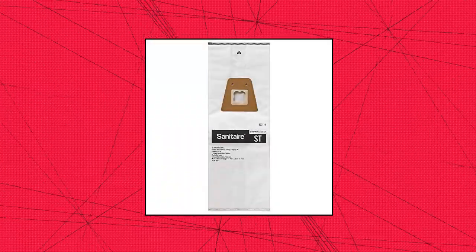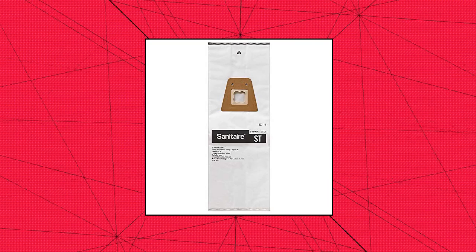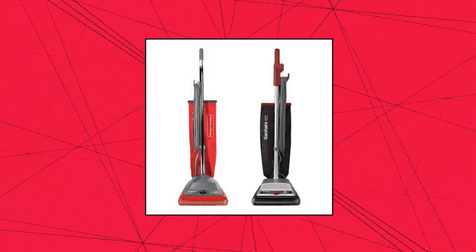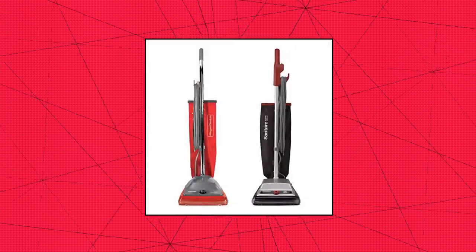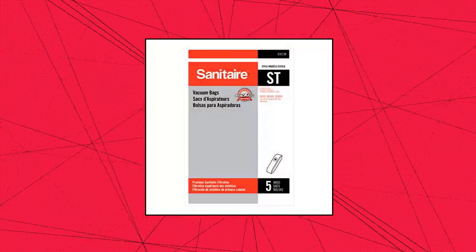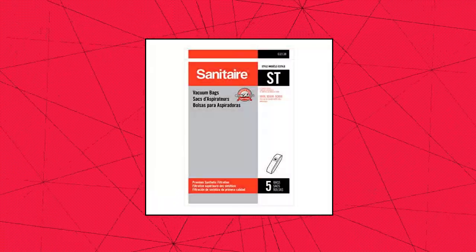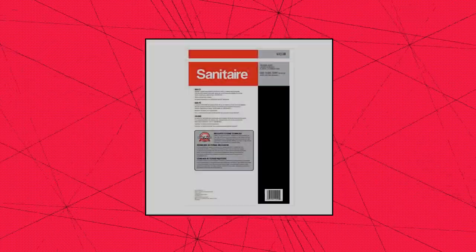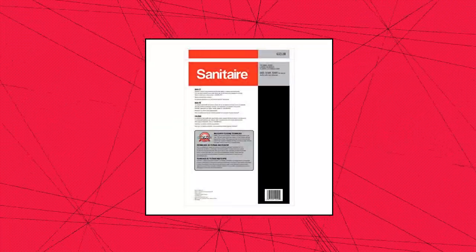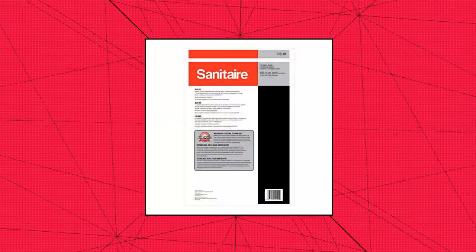5 Pack Street Style Sanitaire Vacuum Bag, ST Style. Lasts 2x longer than paper bags. Made with synthetic material for better filtering and trapping dust. Fits SC889, SC688, and SC888 Series Sanitaire Models. Contains 5 bags.